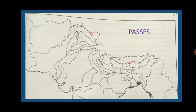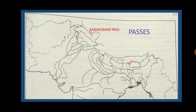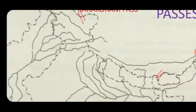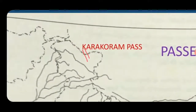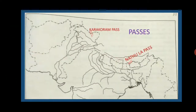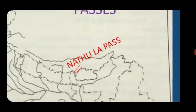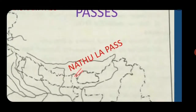Next are passes. Passes means a gap between mountains to cross or go to another country or place. The first one is Karakoram Pass — you have to mark two dashes for it. Next one is Nathula Pass, which is on the eastern side of Sikkim and connects India to China.